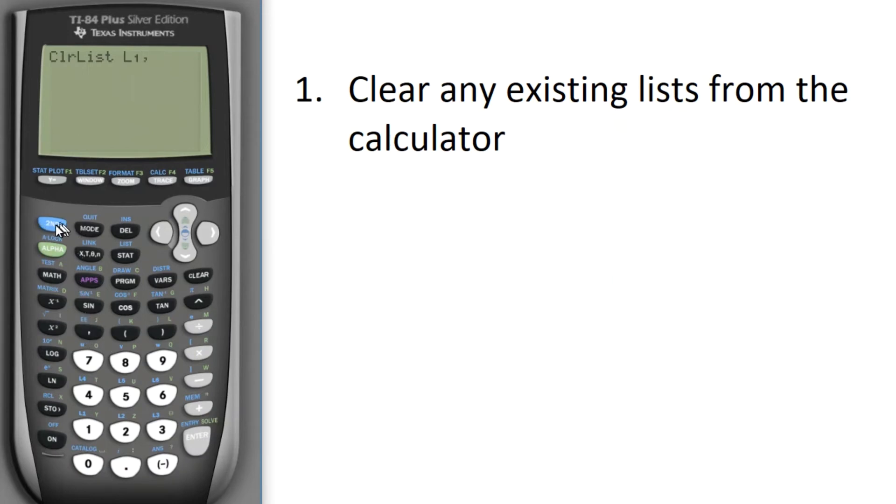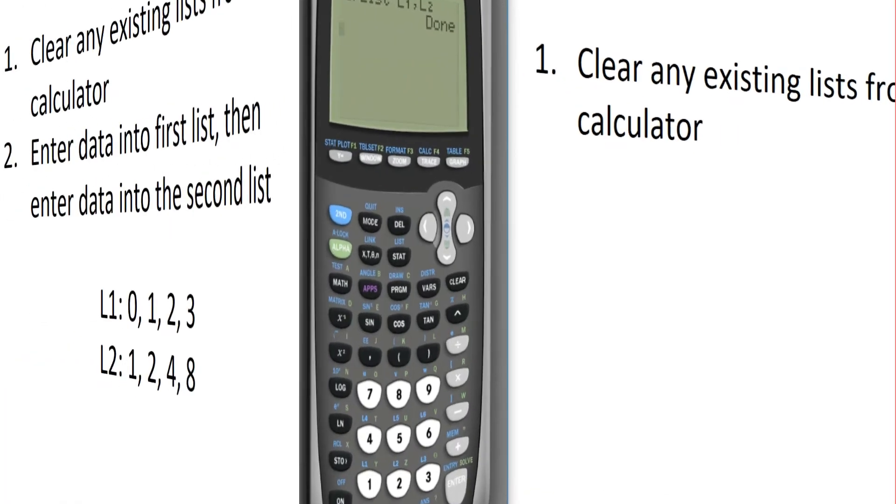Then hit the comma. I also want to clear everything out of list 2, so I'm going to scroll down to list 2. I could keep going and do all the way through list 6, but I just have data right now in list 1 and list 2. So I'm going to hit Enter, and then it tells me that it has cleared the lists. So I've got a nice empty calculator ready to go.